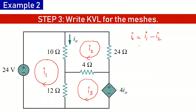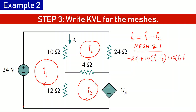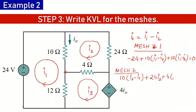Now we write the KVL equations for all meshes, again using rise in potential as negative and fall in potential as positive. For mesh 1, starting from the designated point: minus 24 volts, plus 10(i1 minus i2), plus 12(i1 minus i3) equals zero. For mesh 2, starting from its point: plus 10(i2 minus i1), plus 24·i2, plus 4(i2 minus i3) equals zero.